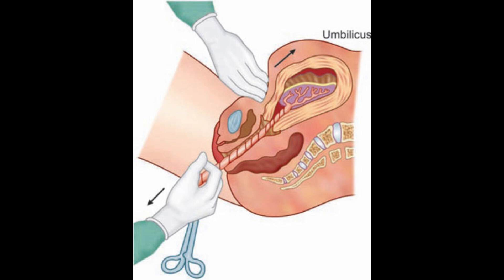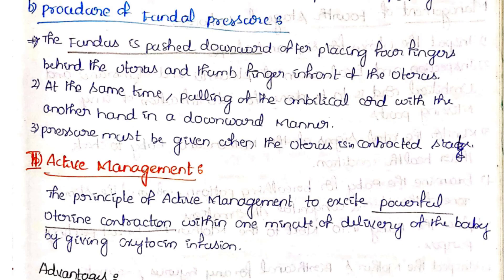For controlled cord traction, the palmar surface of one hand is placed on the mother's abdomen at the junction between the lower and upper uterine segment. The uterus is gently pushed upwards as counter-traction, while at the same time traction is applied on the umbilical cord in a downward direction, so the placenta and membranes are expelled completely.